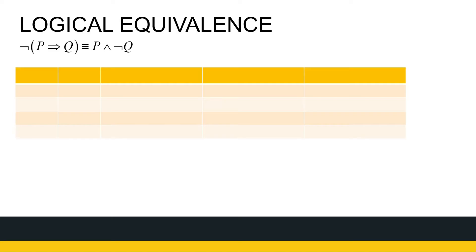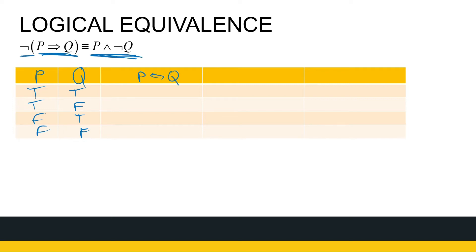Next: ¬(P→Q) is logically equivalent to P∧¬Q. We're looking at the negation of an if-then statement. P→Q is false only when true implies false; otherwise it's true. So the truth values for P→Q are: true, false, true, true. Therefore ¬(P→Q) is: false, true, false, false — that's the left-hand side.